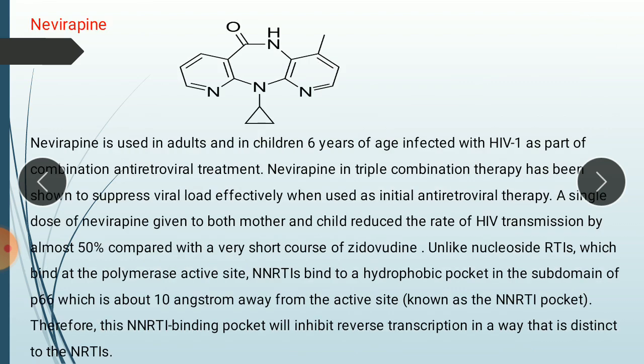The important drugs of the NNRTI category: the first one is Nevirapine. It is used in adults and children 6 years of age infected with HIV-1 as part of combination antiretroviral treatment. Nevirapine in triple combination therapy has been shown to suppress viral load effectively when used as initial antiretroviral therapy. A single dose given to both mother and child reduces the rate of HIV transmission by almost 50% compared with a very short course of zidovudine. NNRTIs bind to a hydrophobic pocket in the sub-domain of P66, about 10 angstroms away from the active site, which is distinct from the binding site of NRTIs.